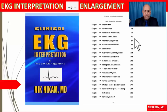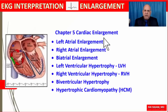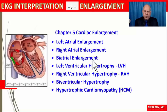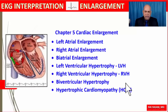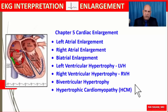In this presentation we will focus on chamber enlargements. We are going to cover left atrial enlargement, right atrial enlargement, biatrial enlargement, left ventricular hypertrophy, right ventricular hypertrophy, biventricular hypertrophy, and hypertrophic cardiomyopathies and their electrocardiographic findings. There is a lot to cover, so let us begin.